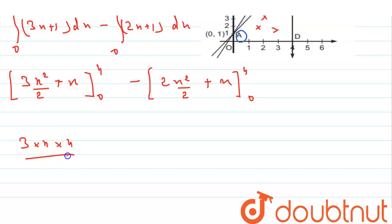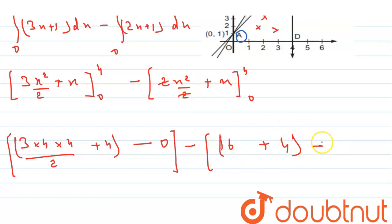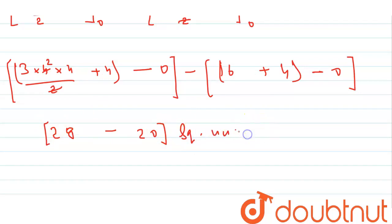Substituting x = 4: the first integral gives 3 × (4 × 4)/2 + 4 = 3 × 8 + 4 = 24 + 4 = 28. The second integral gives (4²) + 4 = 16 + 4 = 20. So the area equals 28 − 20 = 8 square units. That is the area of the shaded triangular region.